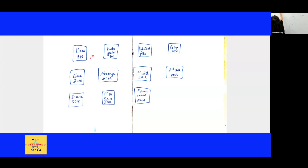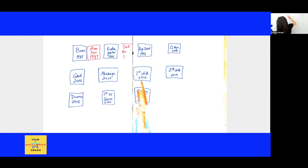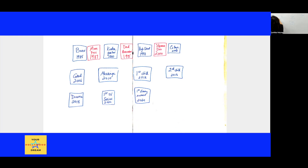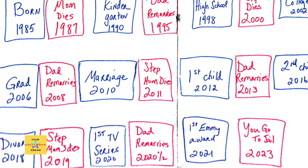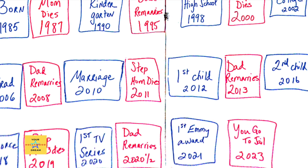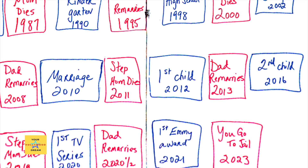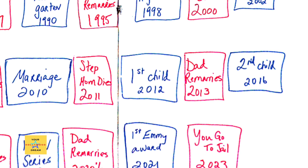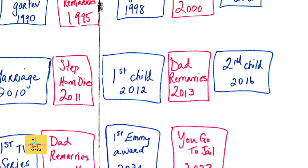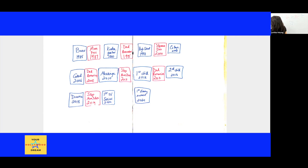Let's take a look at adding some components to this list that will help bring it more to life. 1987, mom dies. 1995, dad remarries. 2000, stepmom dies. 2008, dad remarries. 2011, stepmom dies. 2013, dad remarries. 2019, you guessed it — stepmom 3 dies.